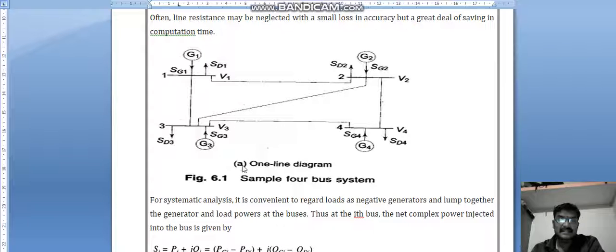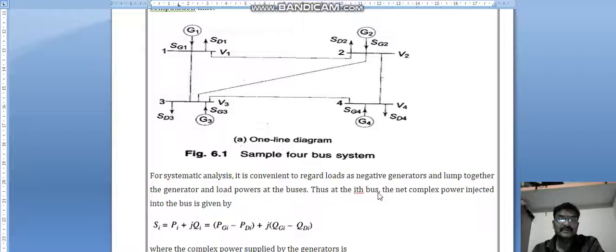This is a single line diagram of four generators with the sample four bus system. For systematic analysis, it is convenient to regard loads as negative generators and lump together the generators and load powers at the buses. Thus at each bus, the net complex power injected into the bus is given by Si.